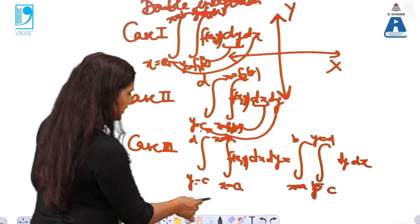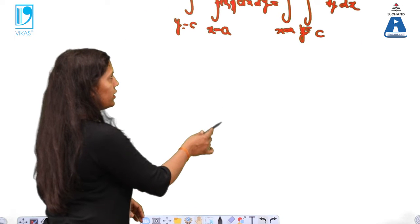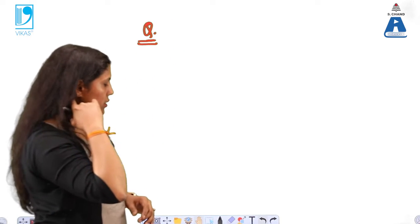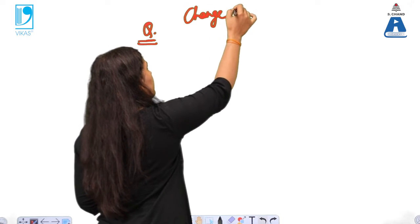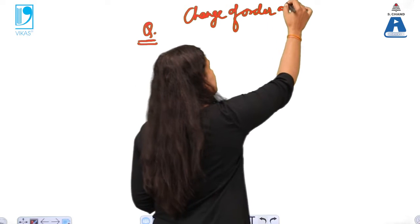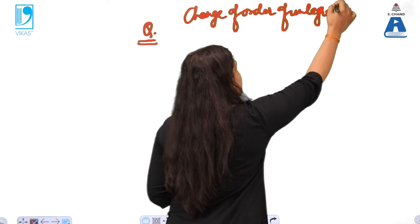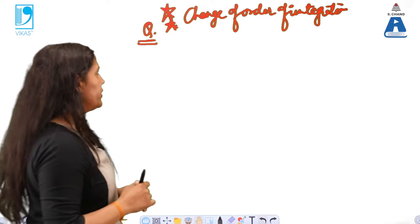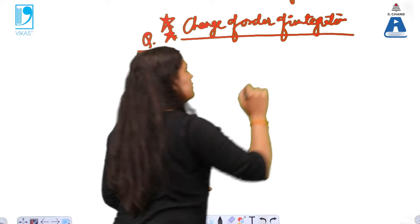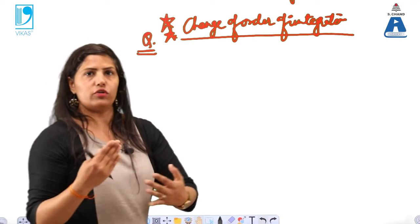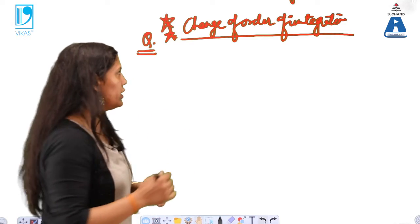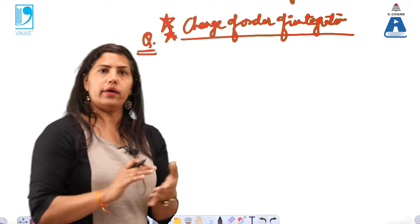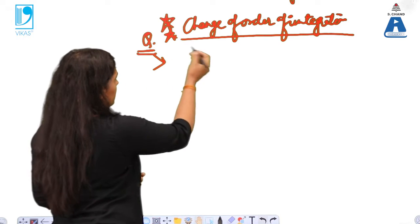Before going to the example I want to mention one very important term — change of order of integration. This is very, very important and arguably the most important topic when we talk about area by double integration. I will take one example where limits are given, and show why and how to change the order of integration.